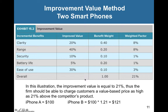We multiply across to get a weighted factor, then sum all the weighted factors together to get 21%. So if your iPhone 8 was $100, we know the iPhone 10 is 21% better. We multiply by 1.21, accounting for that 21% increase, and get $121 — that's how much we can charge, about $21 more.